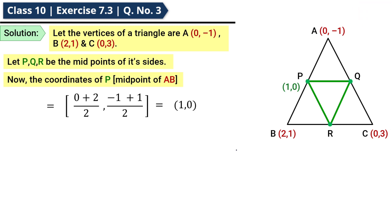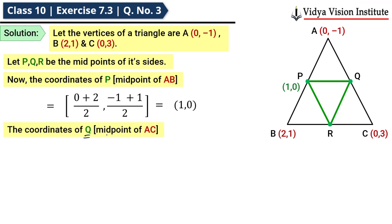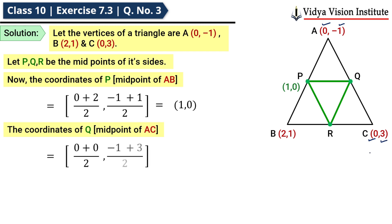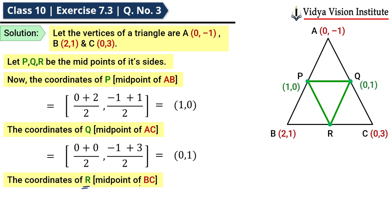Similarly, the coordinates of Q — midpoint of AC — here x1 = 0, x2 = 0, y1 = -1 and y2 = 3. Solving this gives Q = (0, 1). In the same way, we can find the coordinates of point R as well.